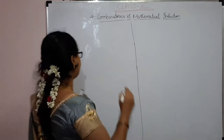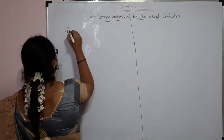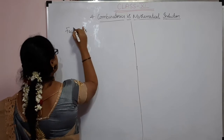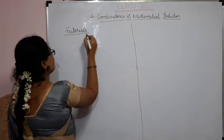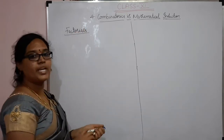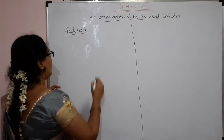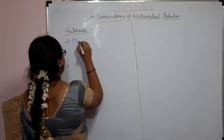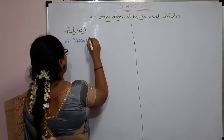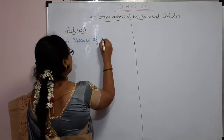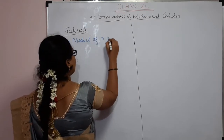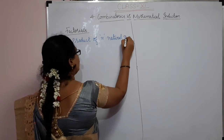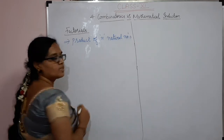What are factorials? Factorials — what is it? It is a product of N natural numbers. Product of N natural numbers.